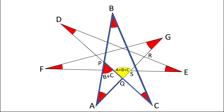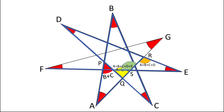Now as we can see the triangle D, Q, R — in this triangle, one of the angles is a plus b plus c and the other angle is d. So by using the exterior angle property in this triangle, I will be getting angle SRE as a plus b plus c plus d. Now simply use the exterior angle property in triangle R, E, S also. If I use the exterior angle property in triangle RES, we can find the angle RSF — which is a plus b plus c plus d plus e.